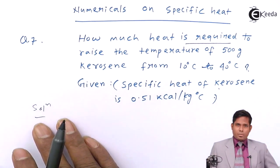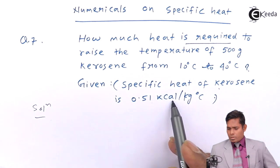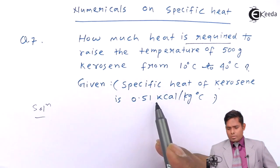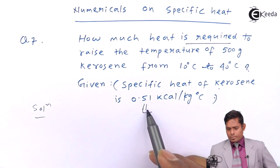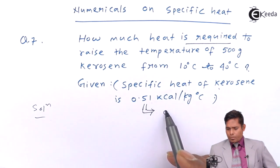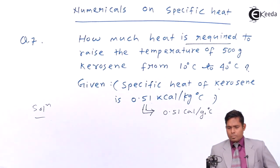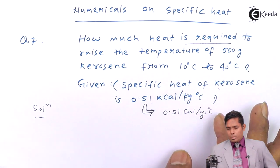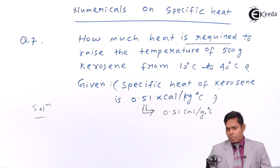To increase the temperature by one degree you need the specific heat value, which is given as 0.51 kilocalorie per kilogram. So per kilogram, 0.51 kilocalorie is required. This also means that 0.51 kilocalorie is required per gram. So for 1 gram of kerosene to raise its temperature by 1 degree, you require 0.51 kilocalorie of heat.